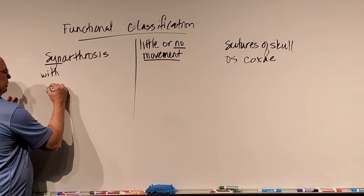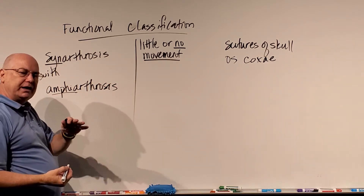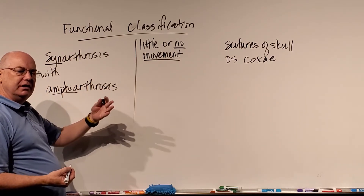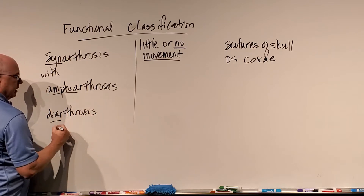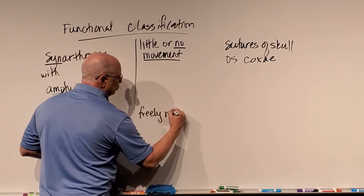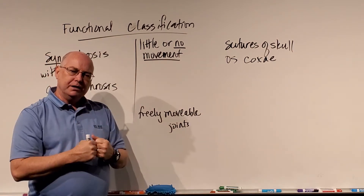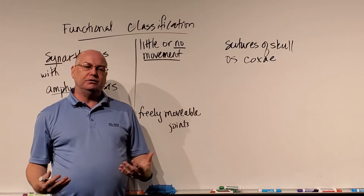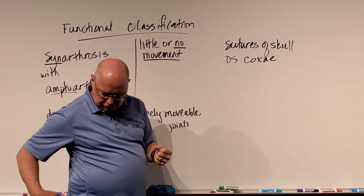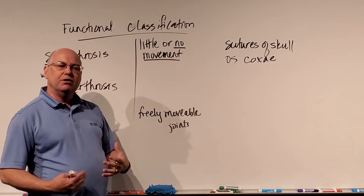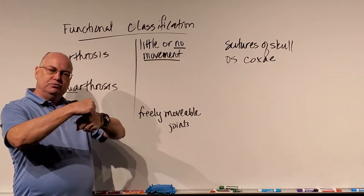I'm going to skip ahead to diarthrosis before covering amphiarthrosis. A diarthrosis consists of freely movable joints — two bones that are free or independent of each other that move together. Think of diarthrosis as most of the joints in the body: fingers, wrist, elbow, shoulder, hip, knees, ankles, toes, and most intervertebral joints. Amphiarthrosis is somewhere between synarthrosis and diarthrosis — joints that have some movement, that kind of wiggle a little bit. They're not freely independent but can wiggle next to each other.